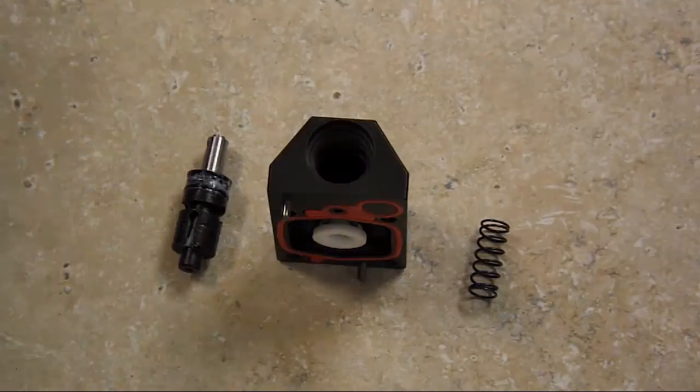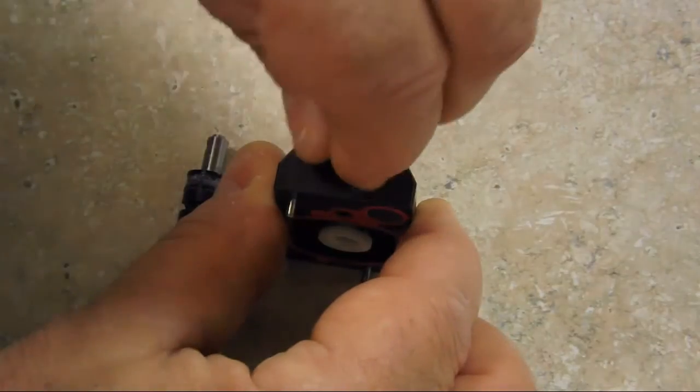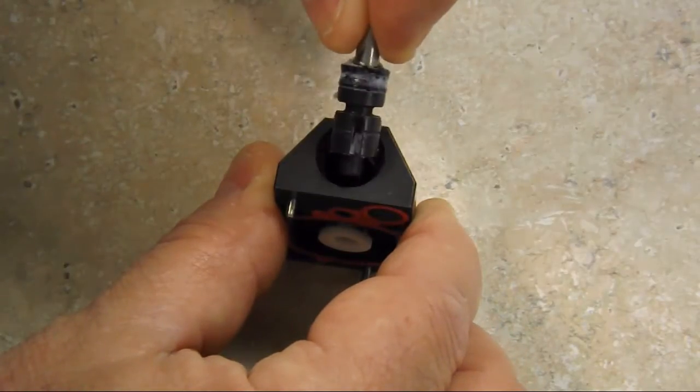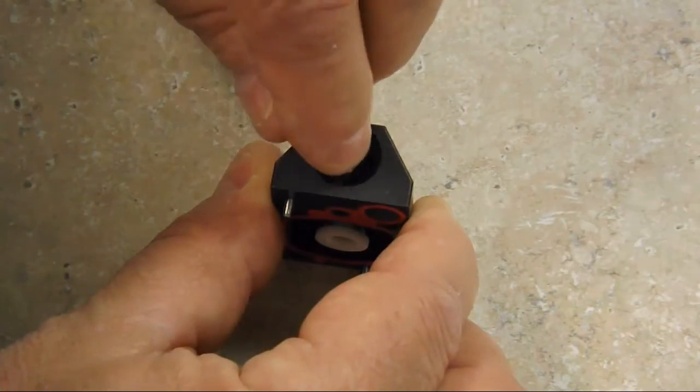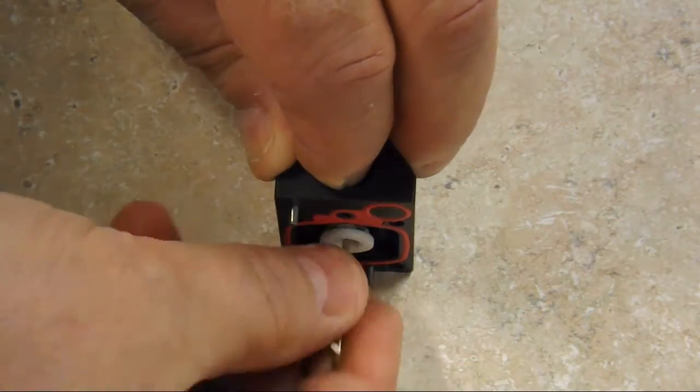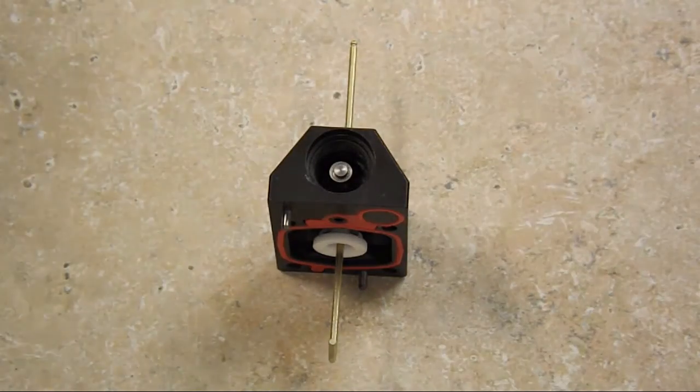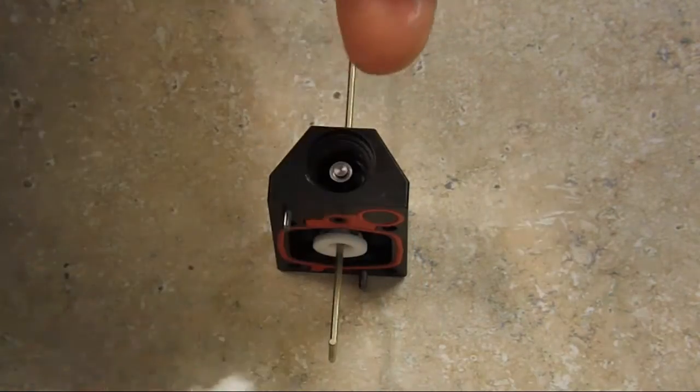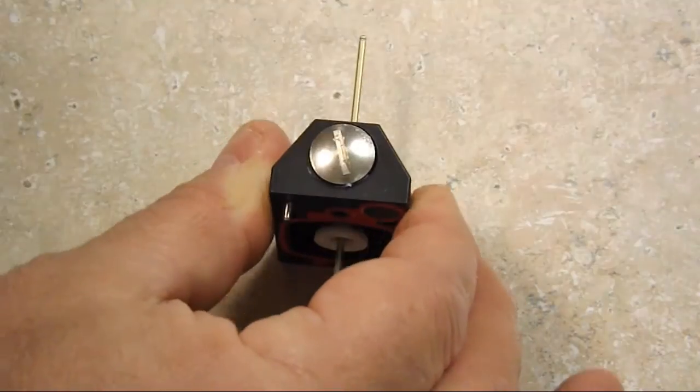Now reassemble, replacing each piece in reverse order. You can insert your Allen key through the aperture to hold it in position so you can replace the cap easier. Now apply a small bead of grease to the cap O-ring to ensure a full seal.